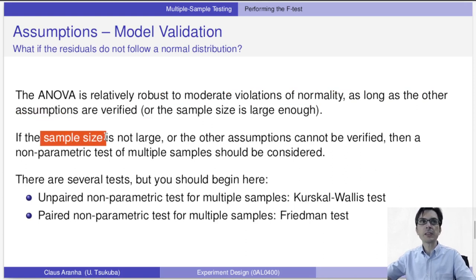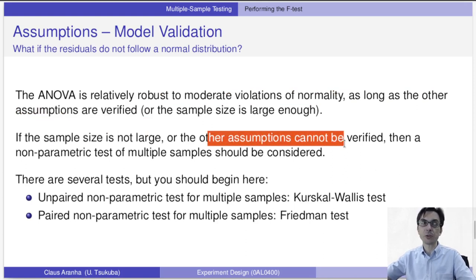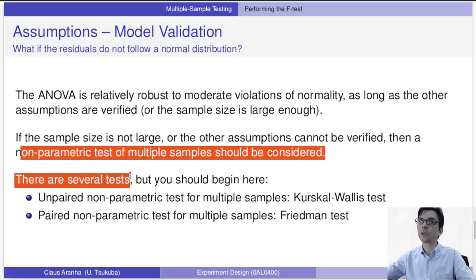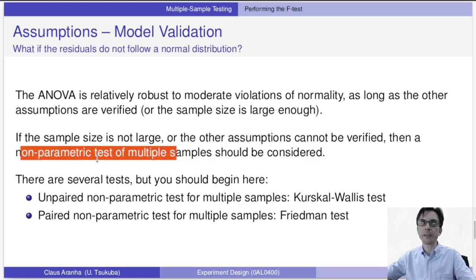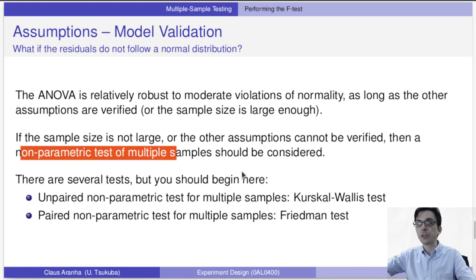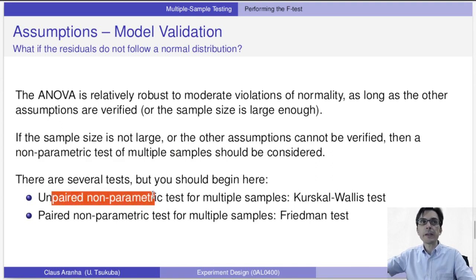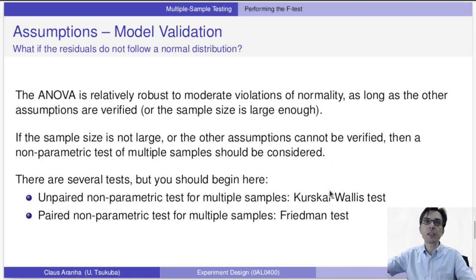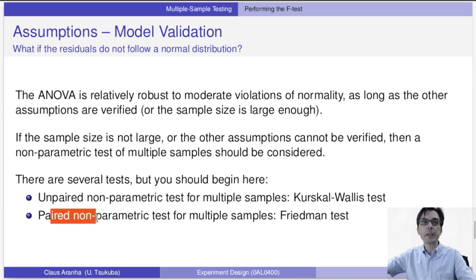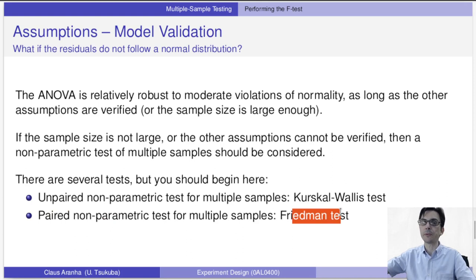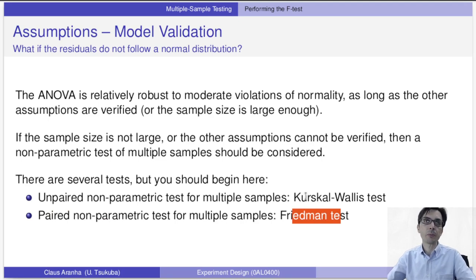If the sample size is not large enough or the other assumptions cannot be verified, we should instead use a non-parametric test. If we want an unpaired non-parametric test for multiple samples, we use the Kruskal-Wallis test. If we want a paired non-parametric test for multiple samples, we use the Friedman test.